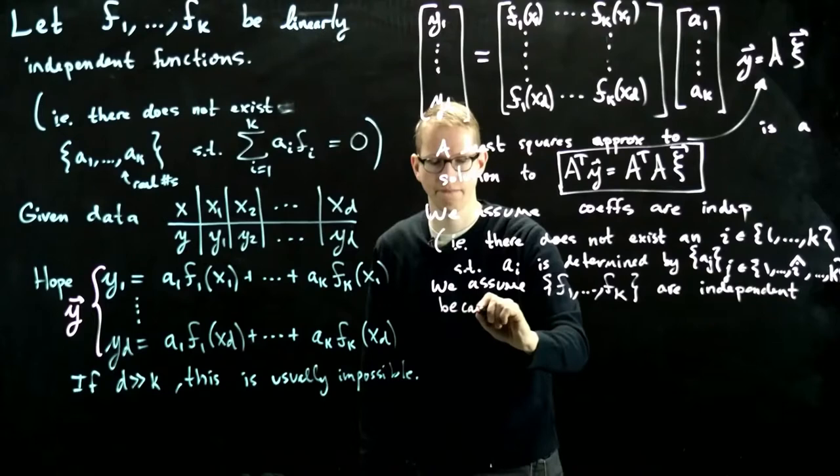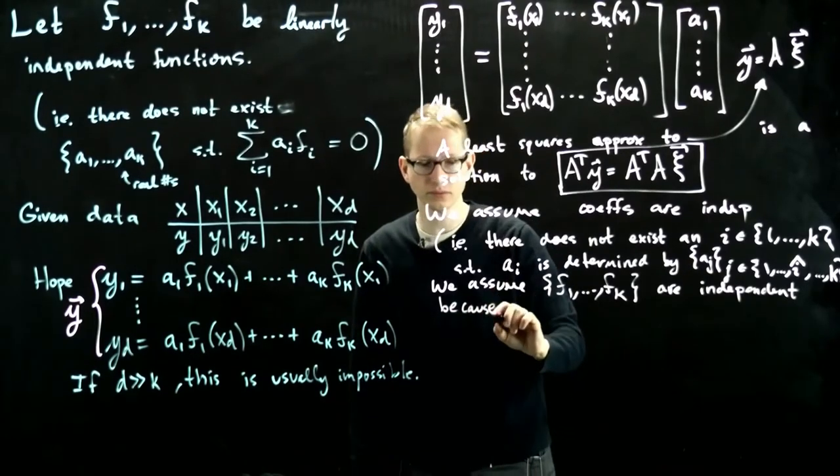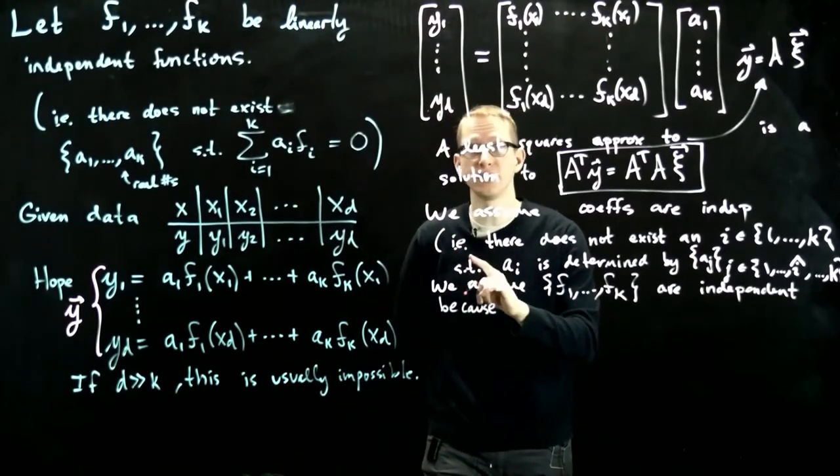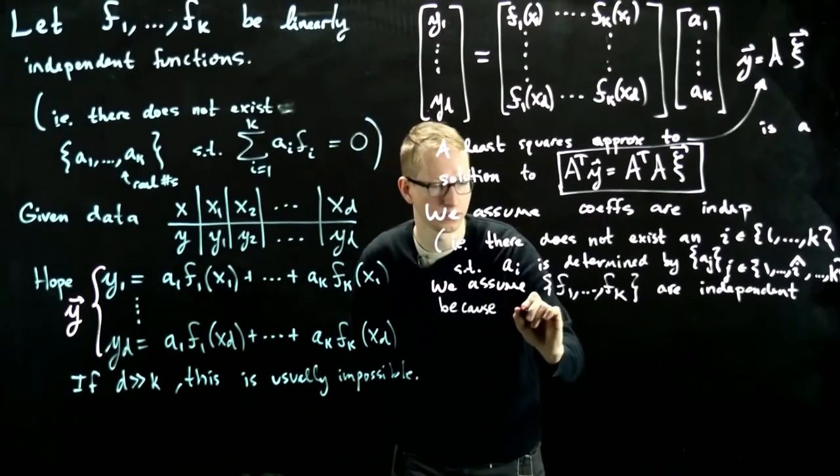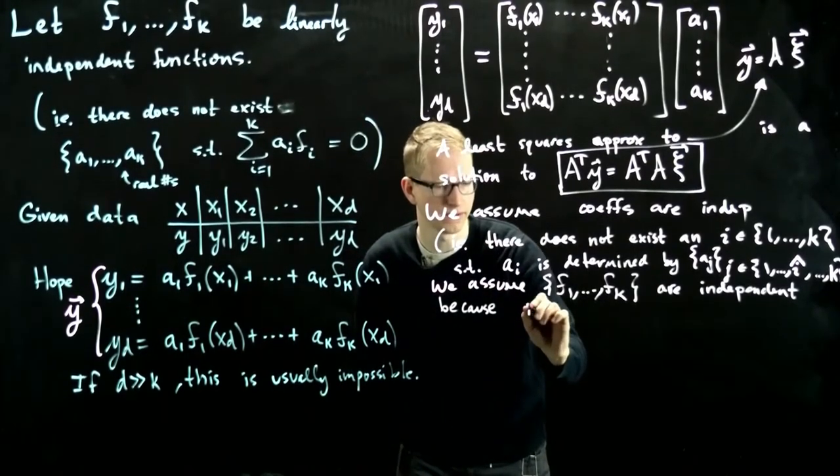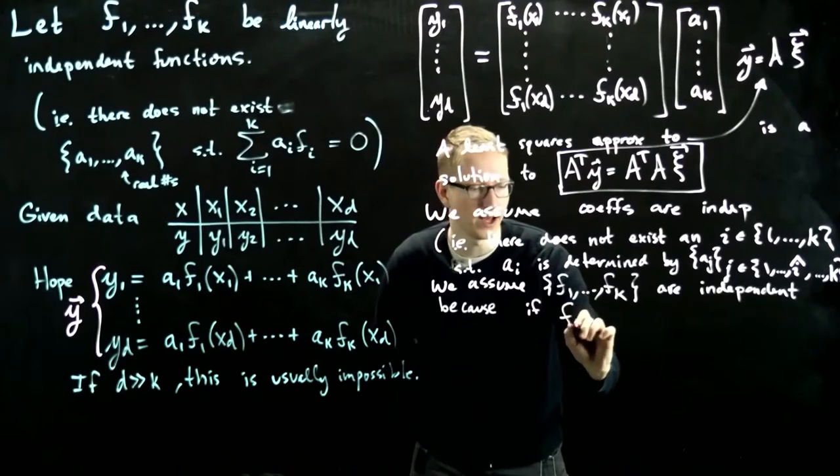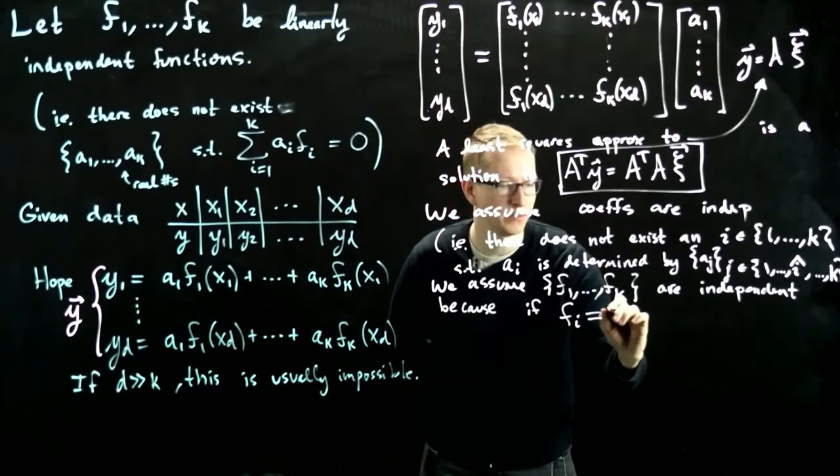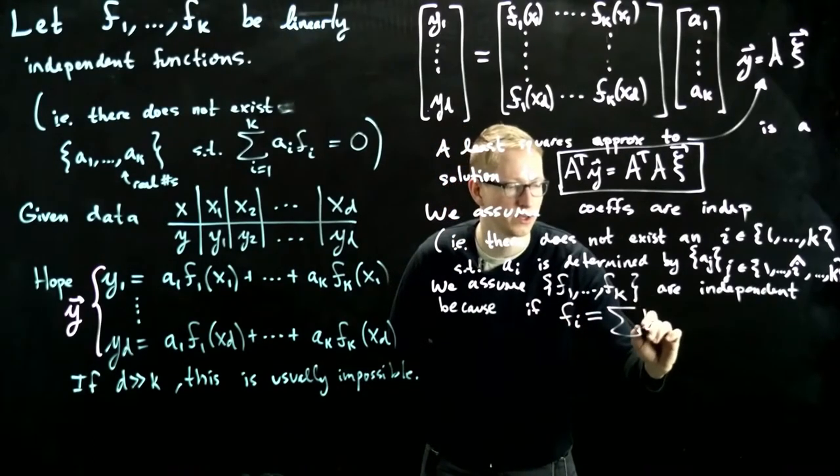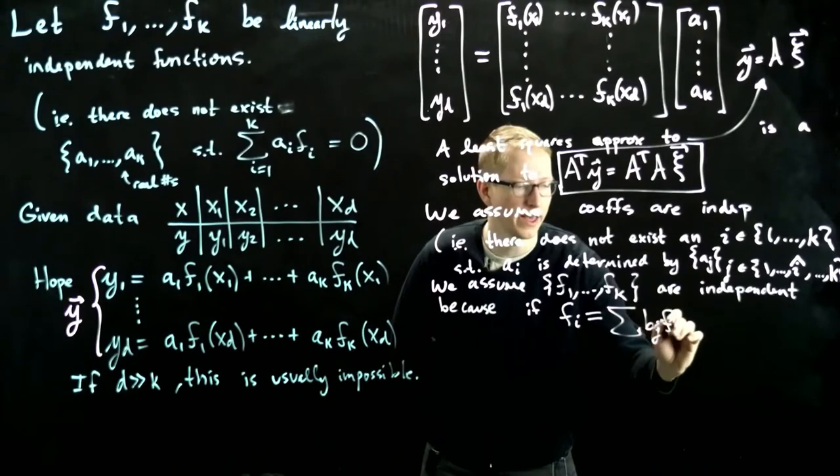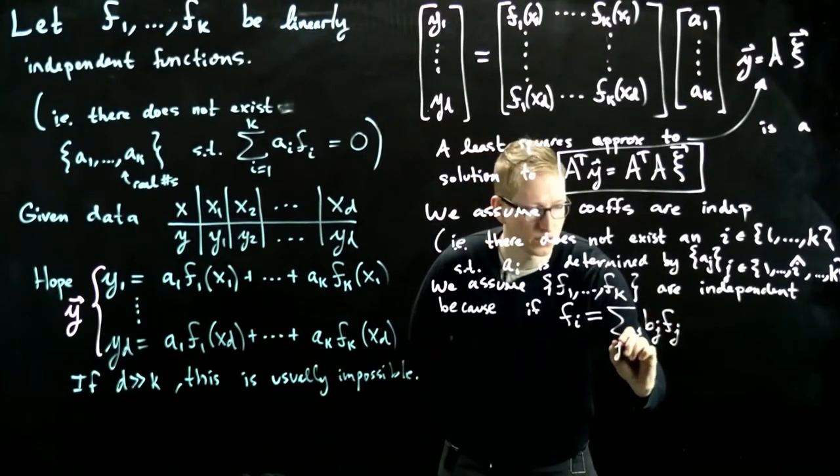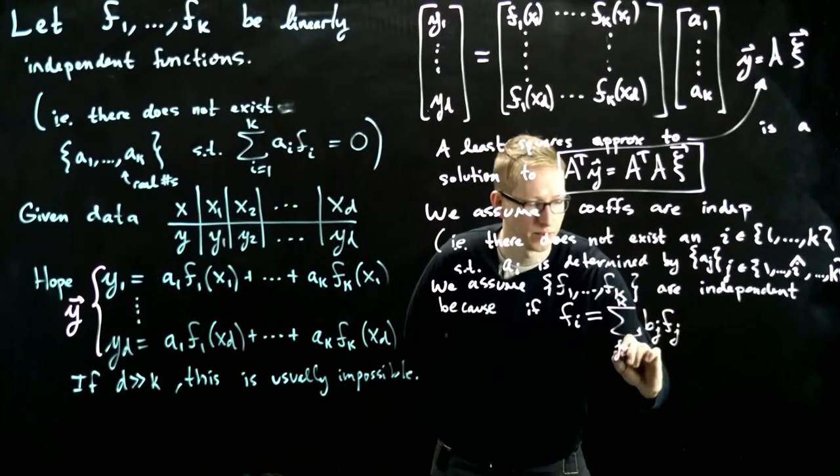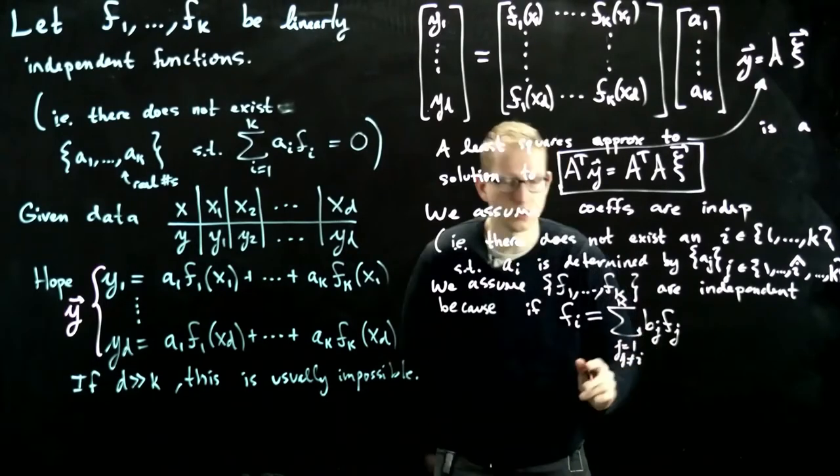And this is because, so suppose that one of these actually depended on the other. So because if, let's say fi equal to some linear combination of the other ones, so let's say bj*fj, so j goes from 1 to k, but j is not equal to i.